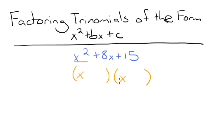Then we need to find two numbers that multiply together to the third term, 15, and that add to the second term, 8. So we know that 3 times 5 is equal to 15, and 3 plus 5 is equal to 8.